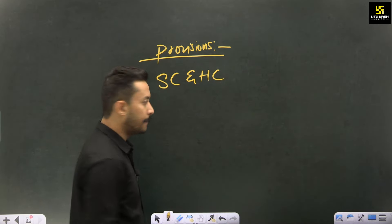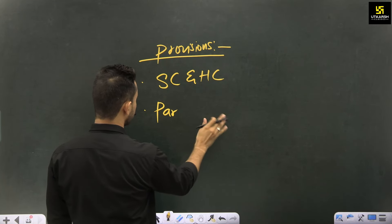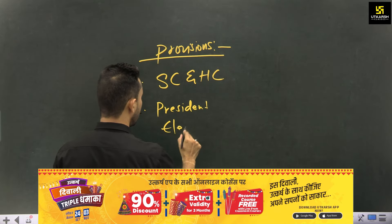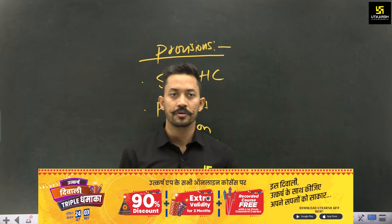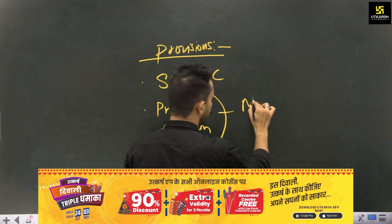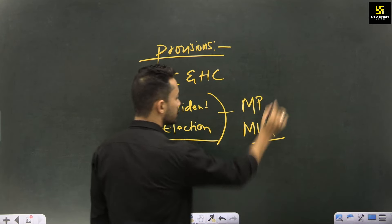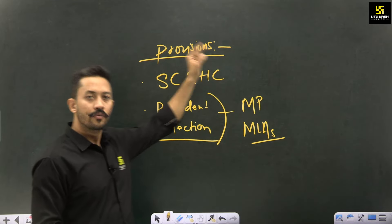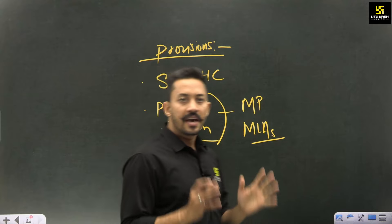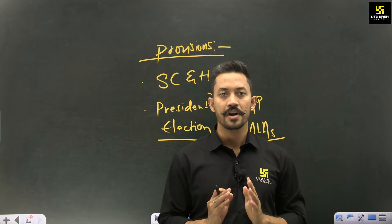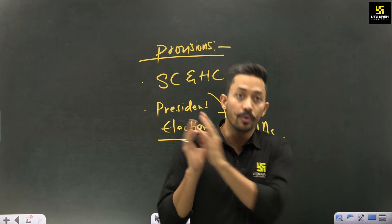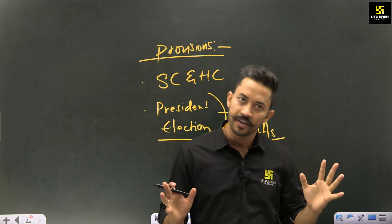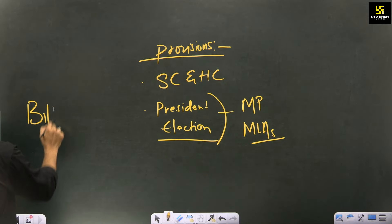For example, if you want to bring changes regarding the powers of High Courts and the Supreme Court, you must use exclusive majority — because the Supreme Court and High Court are connected to states. Another example: if you want to bring any changes in the manner or nature of the election of the President, you need exclusive majority — because in the President's election, not only MPs but also members of state legislative assemblies participate. So this is a matter involving the interest of the states.